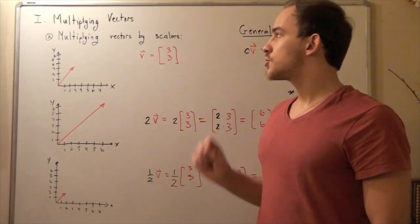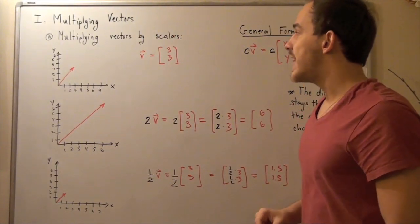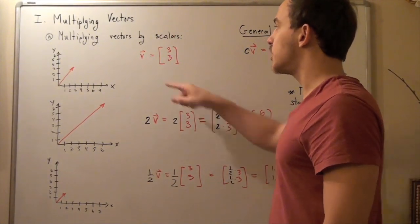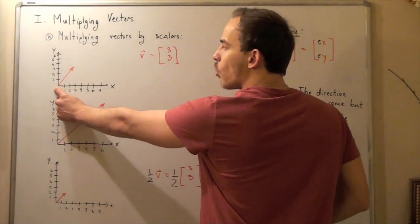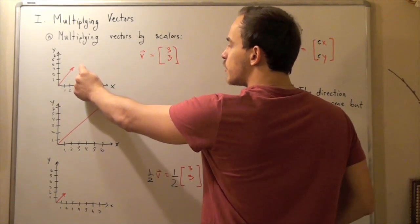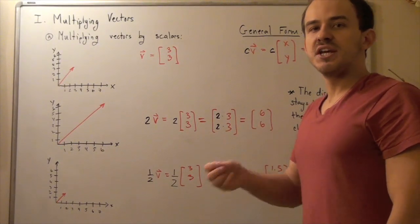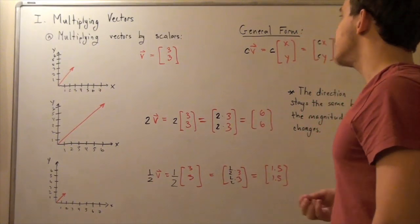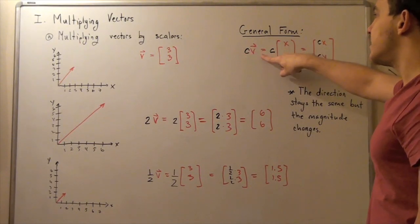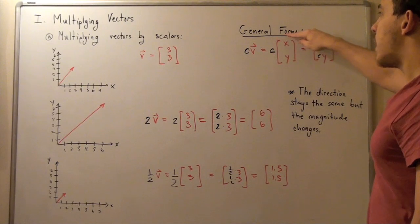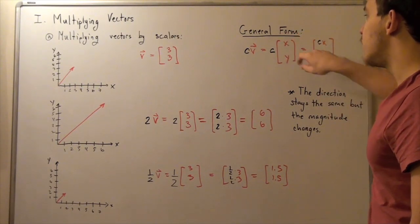Let's begin with the first way: multiplying vectors by scalars. Let's say we have the vector (3, 3), meaning our vector goes from the origin at (0, 0) to (3, 3). The general form of multiplying any scalar C by any vector V is as follows. C multiplied by vector V equals C times the vector, using the matrix representation where this is our x-coordinate and y-coordinate.